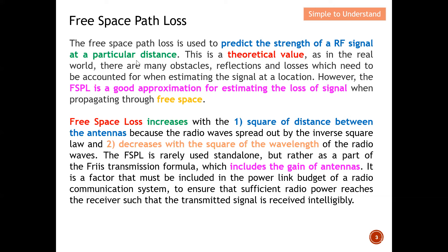Free space path loss is widely used to estimate or predict losses between the transmitter and receiver. The path of propagation of the EM wave must be obstacle-free, which means there should be no obstacle between the transmitter and receiver — giving us a clear line of sight. The electromagnetic wave propagates through free space, meaning air. Free space path loss is used to predict the strength of an RF signal at a particular distance and the separation between the transmitter and receiver.